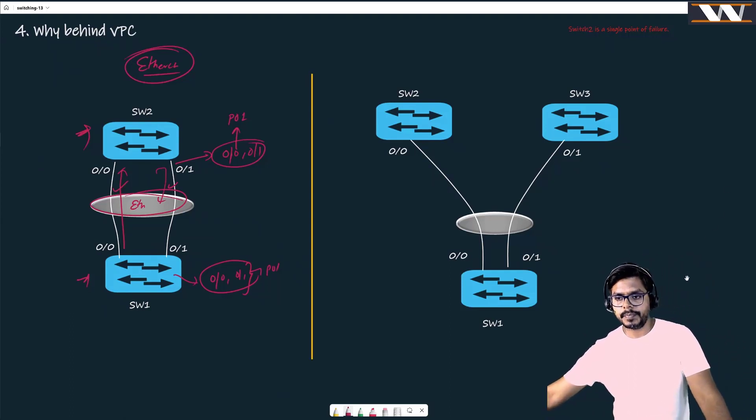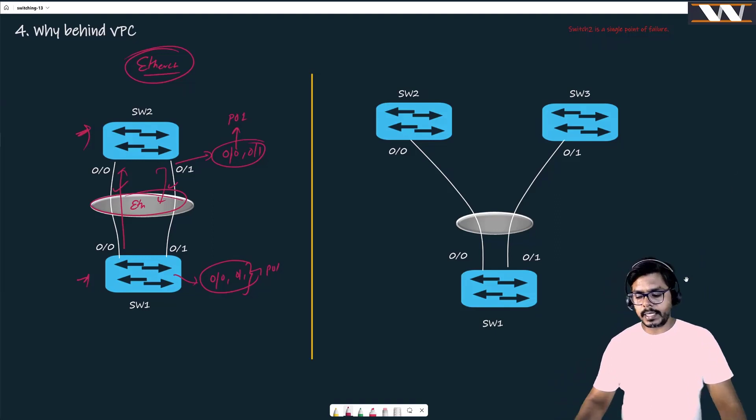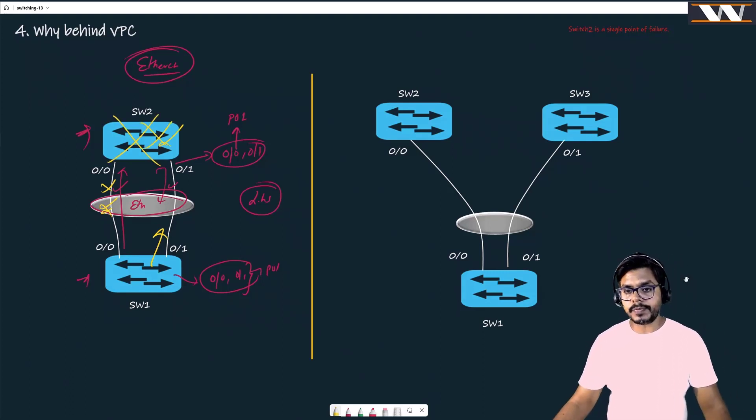On the right hand side, if I show you what we have, on the left hand side you can see that there is definitely a link redundancy. If this link goes down, of course we can send traffic here, there is no doubt about it. But there is no switch redundancy. If this goes down, everything goes down. And that is why everybody is talking about this.